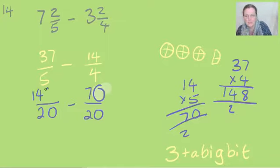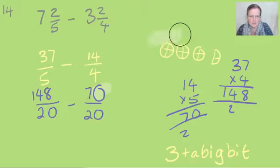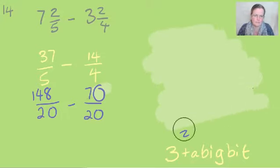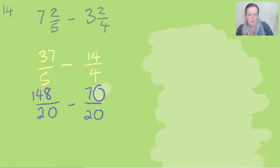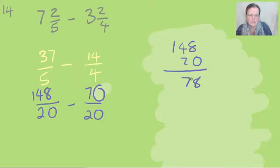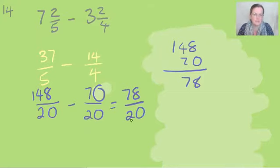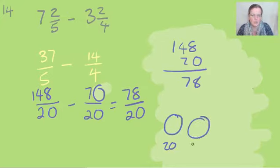So we've got 148... what big numbers we have. 148/20 take away 70/20. Right, let's give ourselves a bit more space. So 148 take away 70... eight, seven... so that's 78/20.